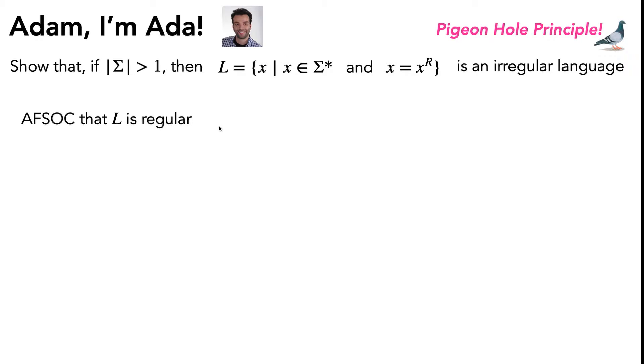Of course, by definition, this means that there's some DFA M with k states that decides the language. Now in order to use the pigeonhole principle, since we've got k states, we are going to consider the k+1 strings, and then you have to pick what these k+1 strings are. And you'll pick them depending on the particulars of this problem.